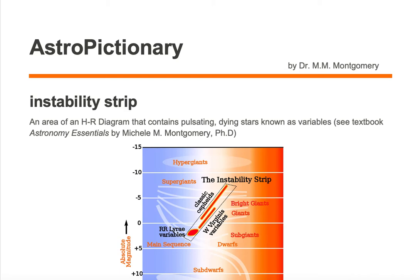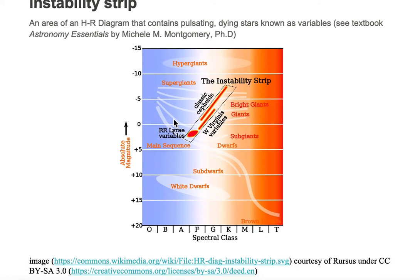The instability strip is an area of an HR diagram that contains pulsating, dying stars known as variables. Let's take a look at an instability strip on an HR diagram.